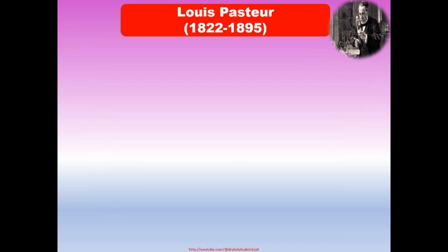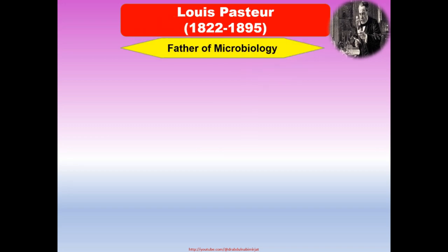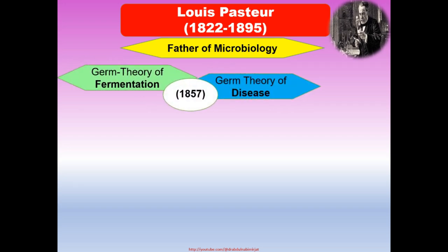Louis Pasteur, a big name in the discovery of microbiology, was born in 1822 and died in 1895. He was also recognized as the father of microbiology, or the father of modern microbiology. He gave the germ theory of fermentation and the idea of the germ theory of disease. The process of fermentation was reported by Pasteur when he was working in the French wine industry to find out why wine and beer spoiled.